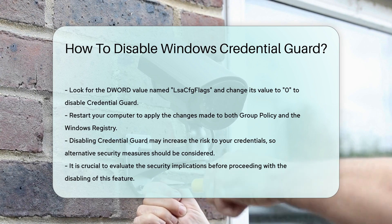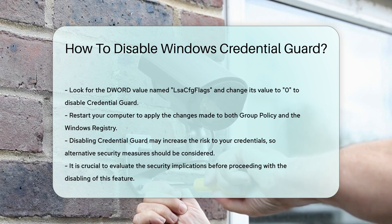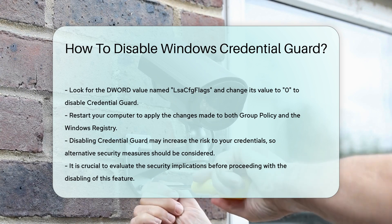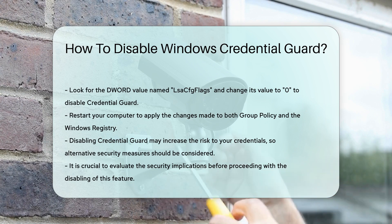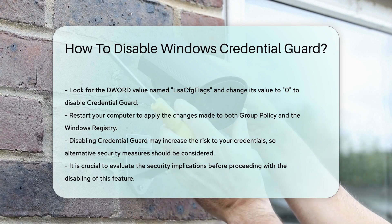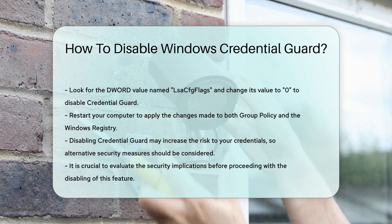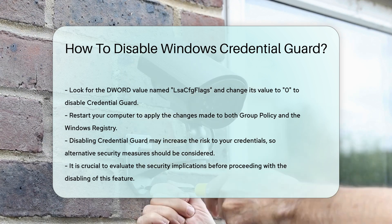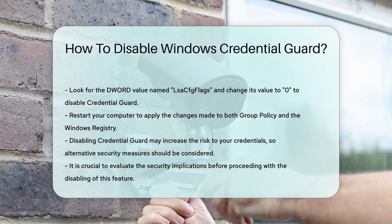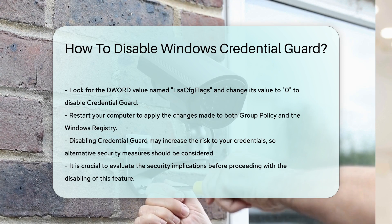By following these steps, you can successfully disable Windows Credential Guard, allowing for a more flexible system configuration. Always consider the security implications before making such changes. Thanks for tuning in to our video. Please like and subscribe and leave a comment below. See you in the next video.